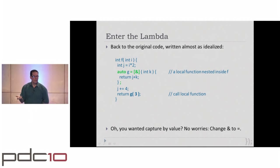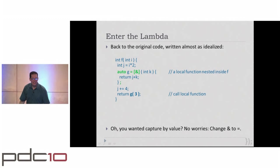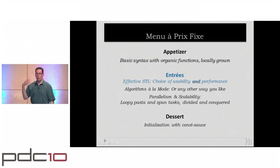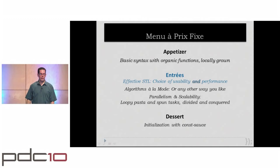With lambda functions, a lambda is a function object — something function-like. You can capture it in an auto variable, which gives it a name. Bingo — that's your local function. You can use it exactly as you wanted in the original problem, without any fuss with local classes or manual capture. And if you want to capture by value instead of by reference, just change the ampersand to an equal sign.